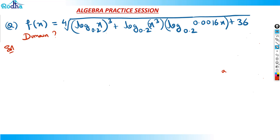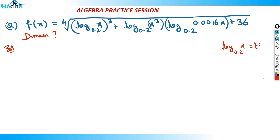Let's start. We can see here that log x base 0.2 appears everywhere. So I'll take log x base 0.2 as t. Once I take log x base 0.2 as t, this part will actually become t cubed.